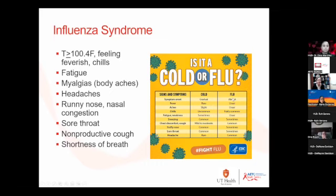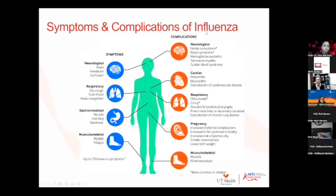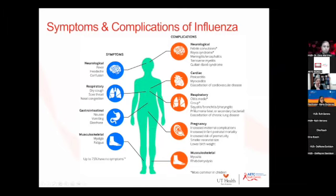Symptom onset with a cold is gradual; flu is abrupt. The real difference is how sick people feel with flu — chills, weakness, and body aches are really flu-like. We worry about complications in the right-hand column: meningitis and encephalitis, Reye's syndrome more common in children, seizures from fever, Guillain-Barré after flu, and cardiac complications like pericarditis and myocarditis — things we now also know as post-COVID syndromes. There are also many superimposed bacterial infections: flu damages your lungs, reduces your ability to clear other infections, and you can get bacterial pneumonia afterward.